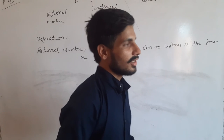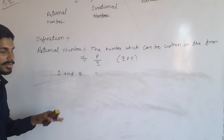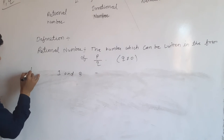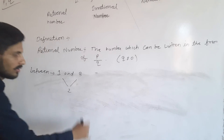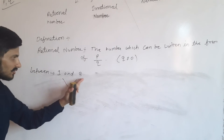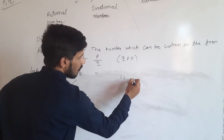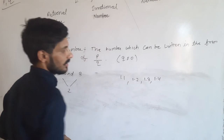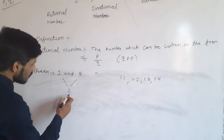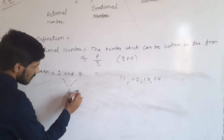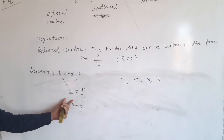So let's talk about rational numbers. If I say that between 1 and 3, how many numbers exist? We can write 2 in the form of 2 upon 1, so this is in the form of P upon Q, and Q is not equal to 0. So 2 is also a rational number.